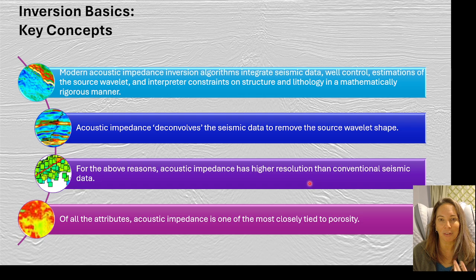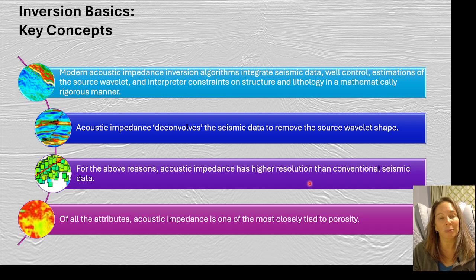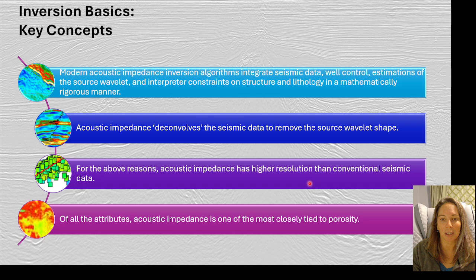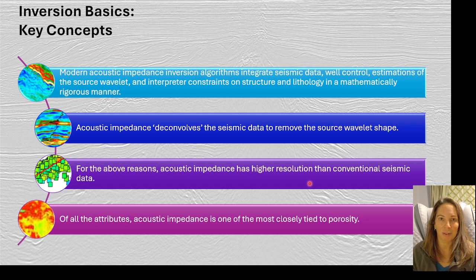To wrap up with a couple of key takeaways: seismic inversion integrates the seismic data, well control, and best estimates of the seismic wavelet together. What the inversion allows us to do is deconvolve the wavelet from the seismic data to get that acoustic impedance model. Acoustic impedance often has a very close relationship with porosity, so a pseudo-porosity volume — like I just demonstrated — is something we can also calculate with inversion. Thanks for listening!